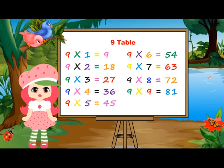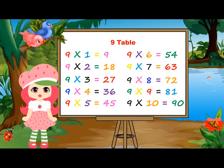9 nines are 81. 9 nines are 81. 9 tens are 90. 9 tens are 90.